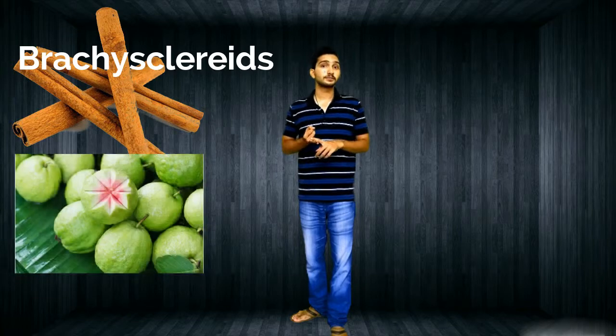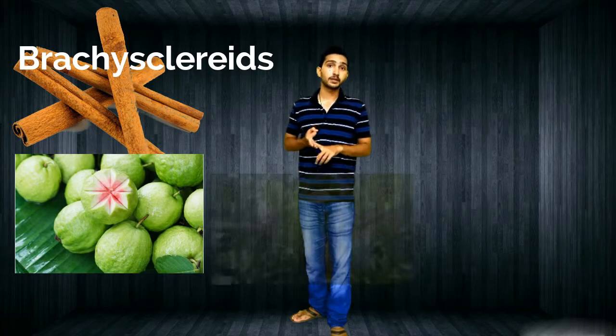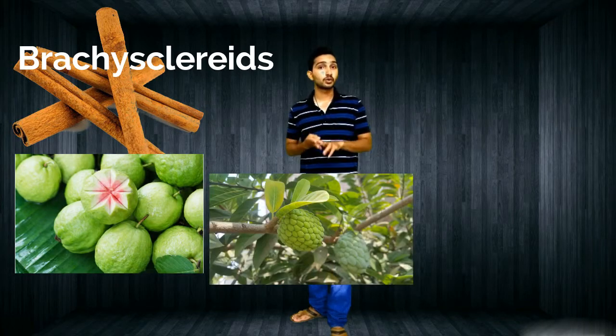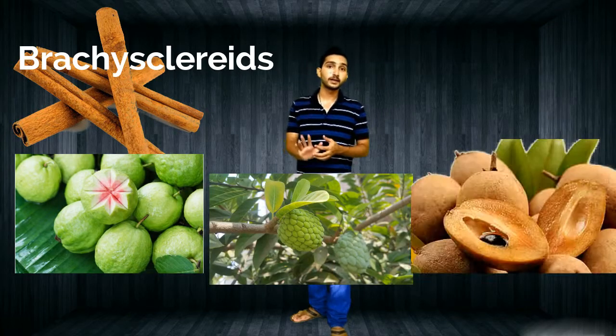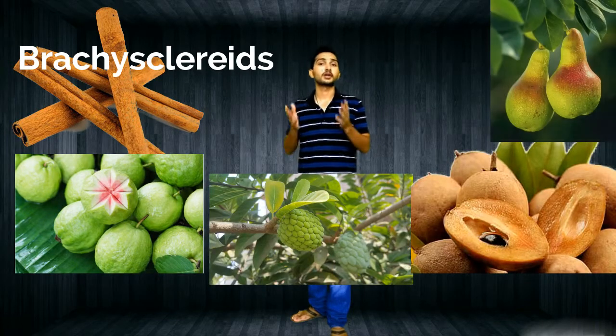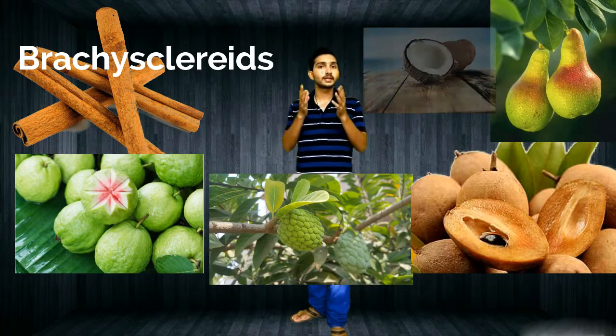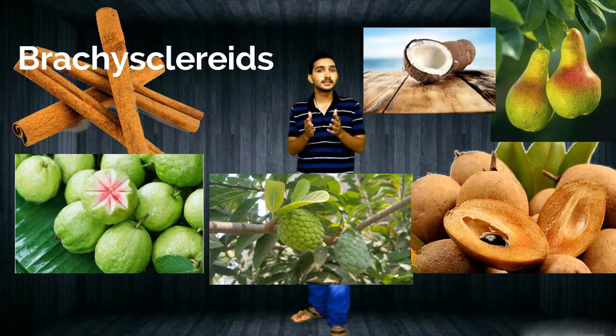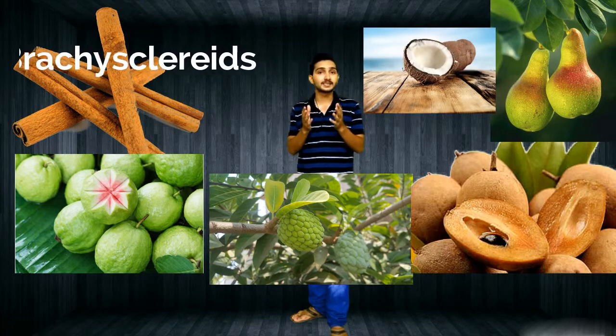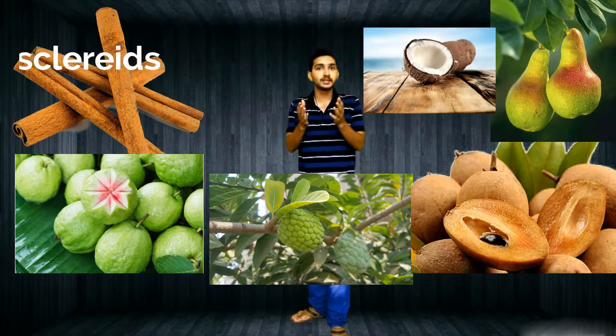Examples of brachysclerids include cinnamon, guava, custard apple, sapota, pear, and coconut. We can easily see brachysclerids mainly in these types of plants.